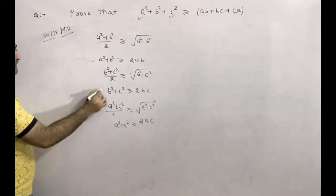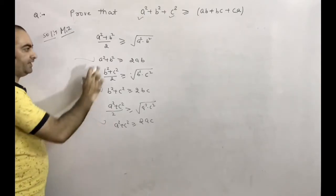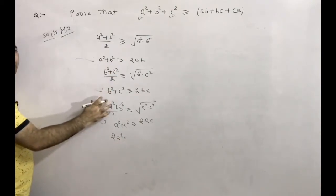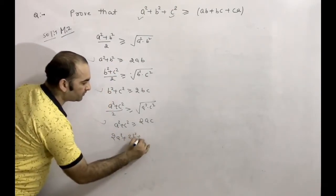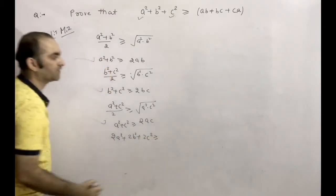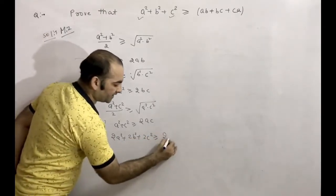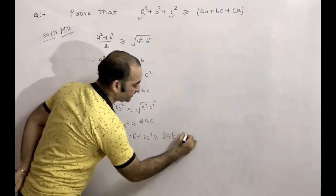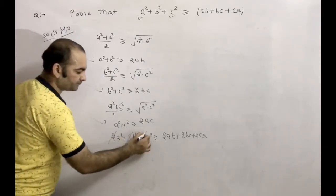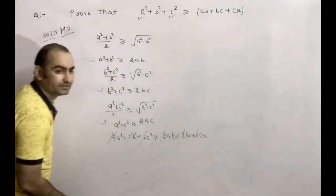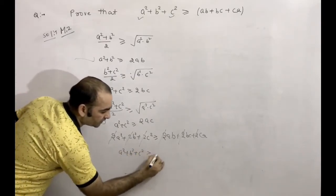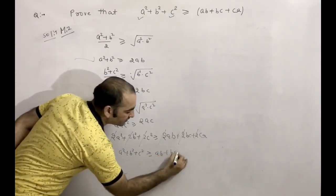Now we add all three inequalities. The left side gives 2a² + 2b² + 2c², which is greater than or equal to 2ab + 2bc + 2ca. Dividing by 2: a² + b² + c² ≥ ab + bc + ca.